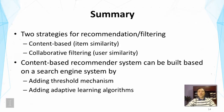So to summarize, there are two strategies for recommended systems or filtering systems. One is content-based, which is looking at the item similarity. And the other is collaborative filtering, which is looking at the user similarity. In this lecture, we've covered content-based filtering approach. In the next lecture, we're going to talk about collaborative filtering. In content-based filtering system, we generally have to solve several problems related to filtering decisioning and learning. And such a system can actually be built based on a search engine system by adding a threshold mechanism and adding an adaptive learning algorithm to allow the system to learn from long-term feedback from the user.